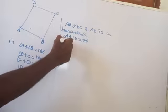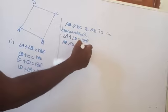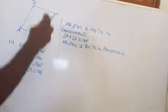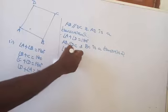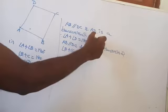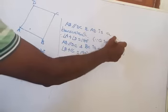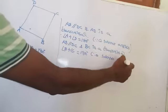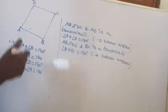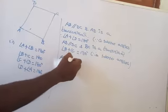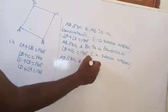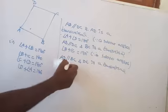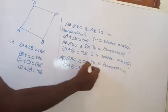Again, AB is parallel to DC and BC is a transversal. Therefore angle B plus angle C equal to 180 degrees — because co-interior angles on the same side of the transversal are supplementary. You have to write down the reason everywhere.